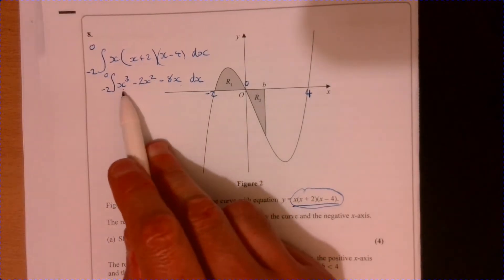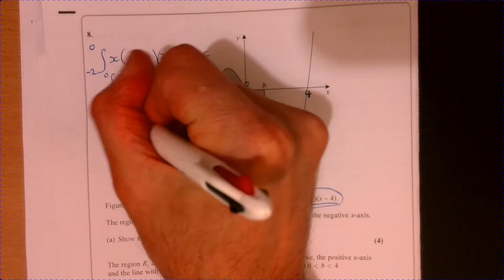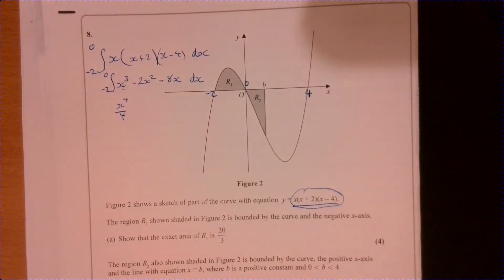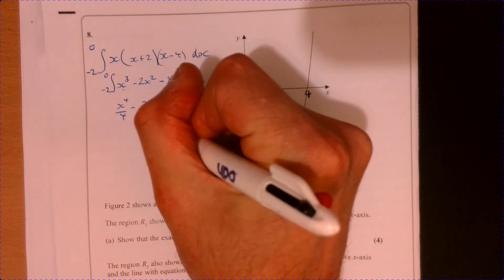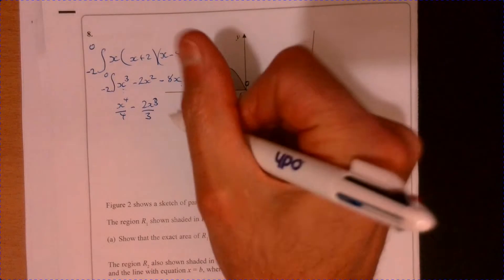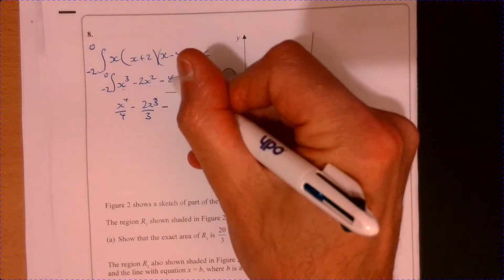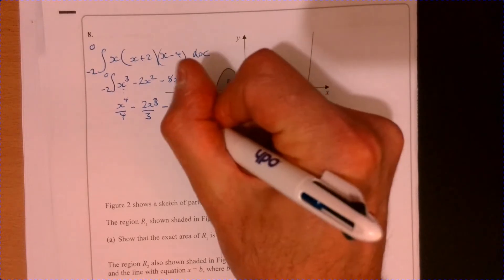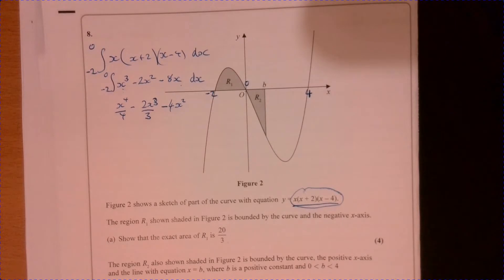Now let's integrate this. So if I integrate the first term, that's there, and then minus two x squared over three. Whoops, that should be a three. Nearly made a mistake there. And then take away, it's going to be eight x squared over two, which is just going to be four. Let's make our life a little bit easier.